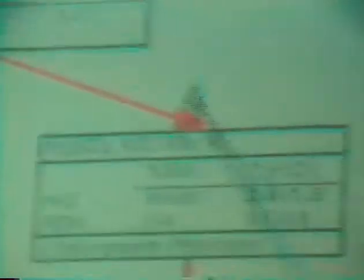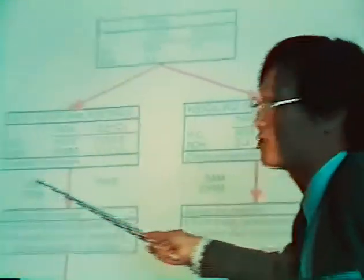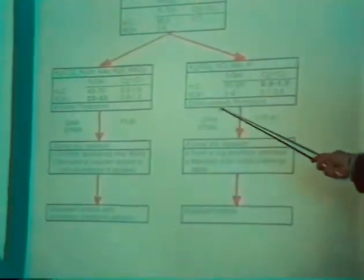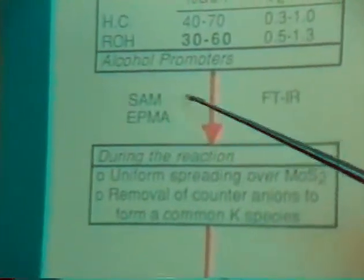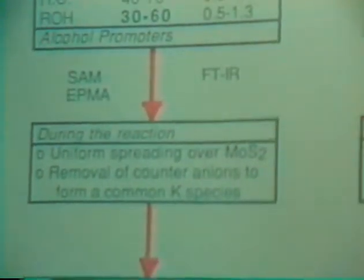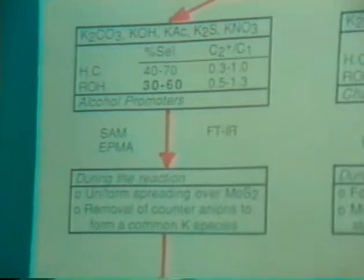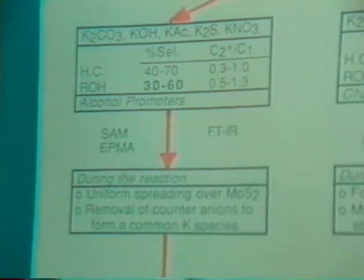Just looking at the phenomena, we can call this type of promoter the alcohol promoters and this group chain growth promoters. Of course you want to understand what factors of the promoters contribute alcohol formation in one case and hydrocarbon formation in other cases. We did some physical characterization including scanning Auger microprobe and electron probe microanalysis. There are two fundamental differences in the behavior of these promoters. The carbonate promoters spread themselves uniformly on the molybdenum sulfide phase. On the other hand, these sulfate promoters show very highly non-uniform distribution, forming sometimes big promoter particles.